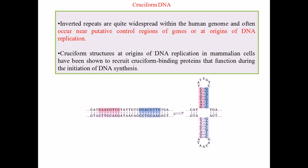Let us talk about cruciform DNA — the structure of cruciform DNA. It is normally formed from inverted repeats, as we can see in this picture. Starting from the DNA, focusing on the highlighted regions, we have sequences like G-A-A-C-G-T-C-C and again G-G-A. This is not a mirror repeat nor a direct repeat sequence.